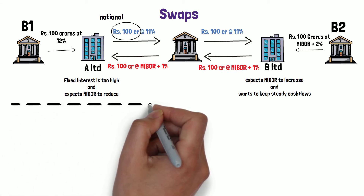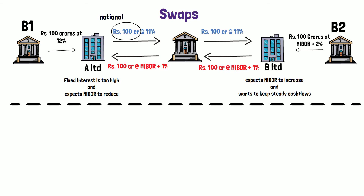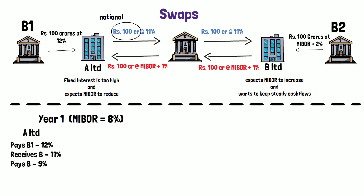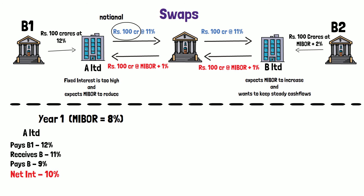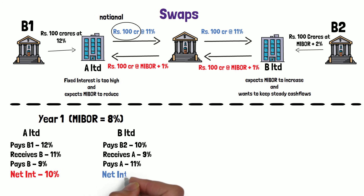In Year 1, when MIBOR is at 8%: A Limited pays its banker B1 at 12%. Under the swap, A Limited receives fixed interest of 11% from B Limited and pays MIBOR plus 1% — that is 9% — to B Limited. So A Limited's overall interest cost is 10%. B Limited pays its banker B2 at MIBOR plus 2%, which is 10%. Under the swap, B Limited receives MIBOR plus 1% (9%) from A Limited and pays A Limited fixed interest of 11%. So B Limited's overall interest cost is 12%.